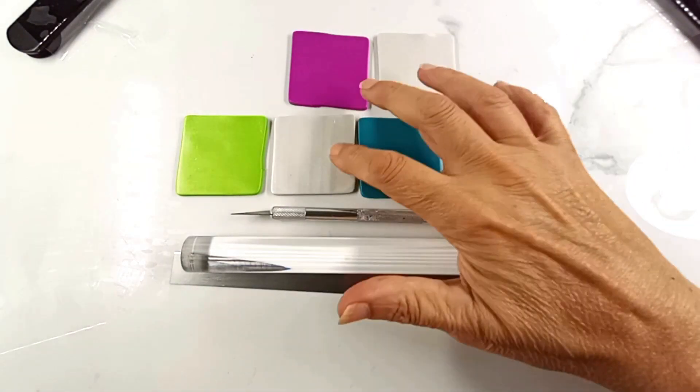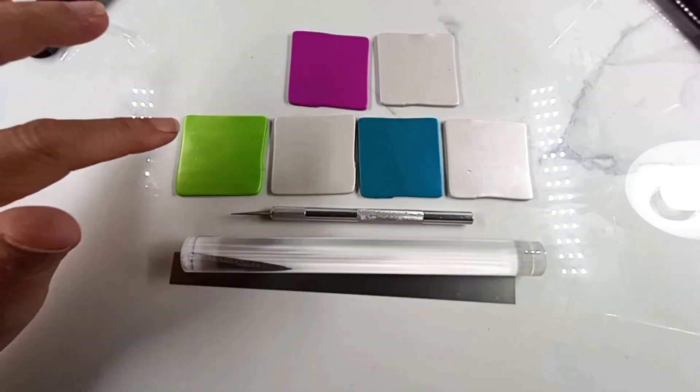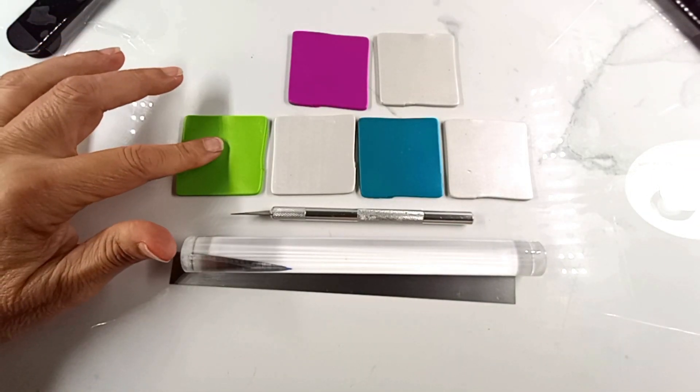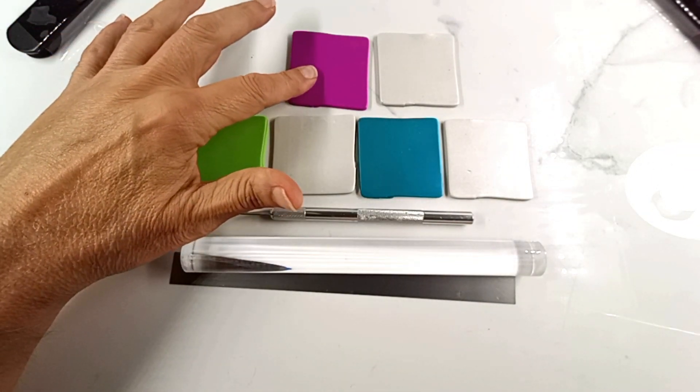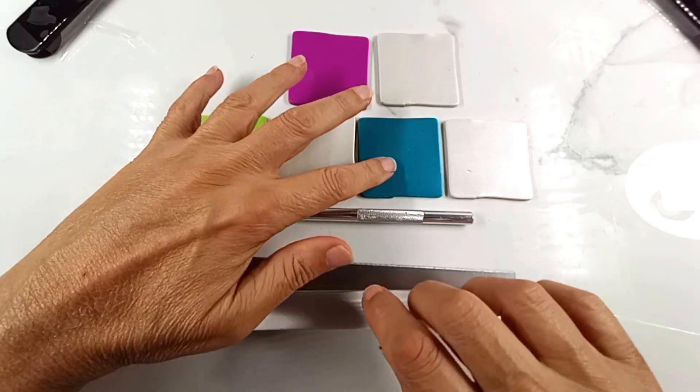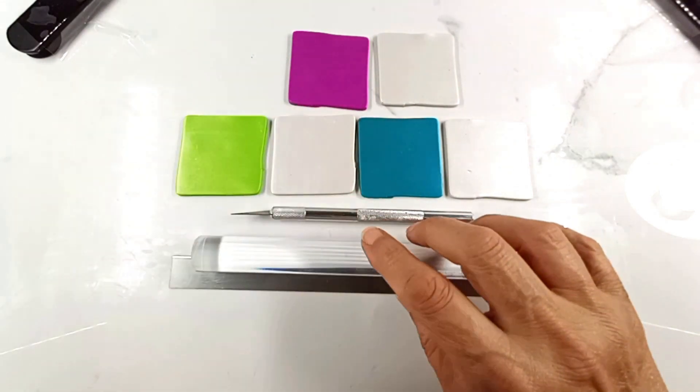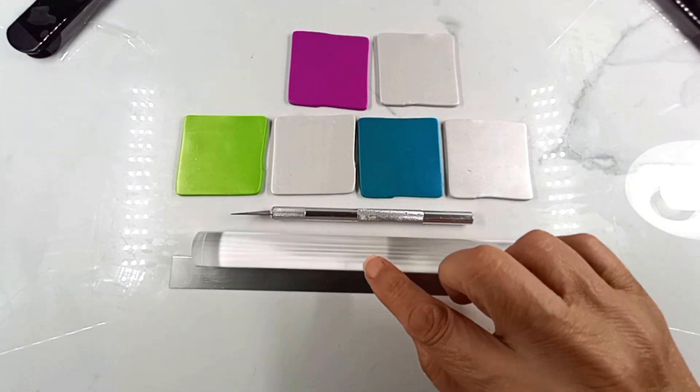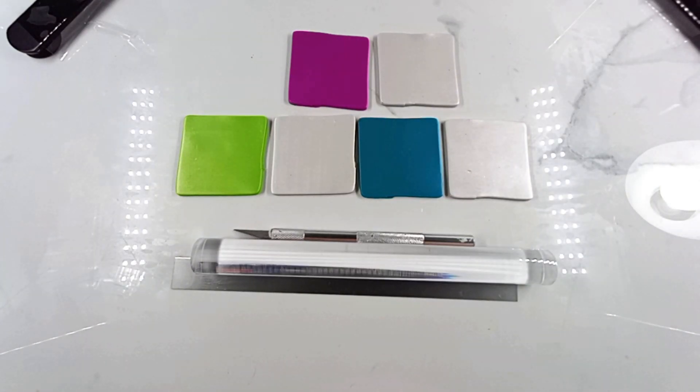So I have three pieces of the pearl: a bright green pearl, a purple pearl, and the peacock pearl. These are all in the Sculpey Primo. I also have my roller, my tissue blade, and my craft knife.